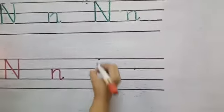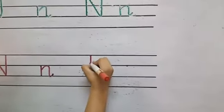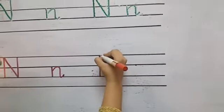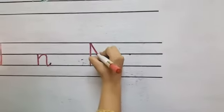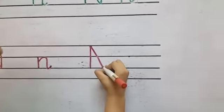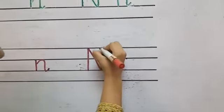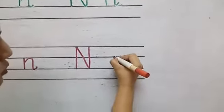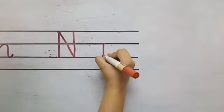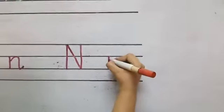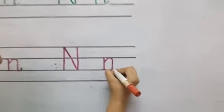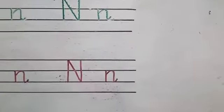Now we write N. Put the base on the dot, make a straight line. Down, down, touch the third line like this. Now start from the first line, go slant down, and go straight up. It will become N. Now we write N — put the base on the dot and make a straight line. Now start from one point down, go up, make it round, go straight, and make a tail. It will become N.